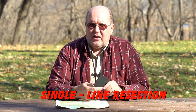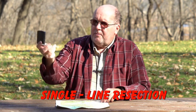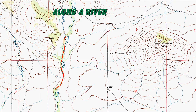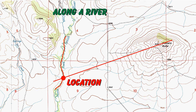You're going to stand alongside the river, you're going to find a feature on the landscape, identify it on the map, take your bearing, transfer that bearing to the map, and where that line hits the river — that's where you be. It's that simple.